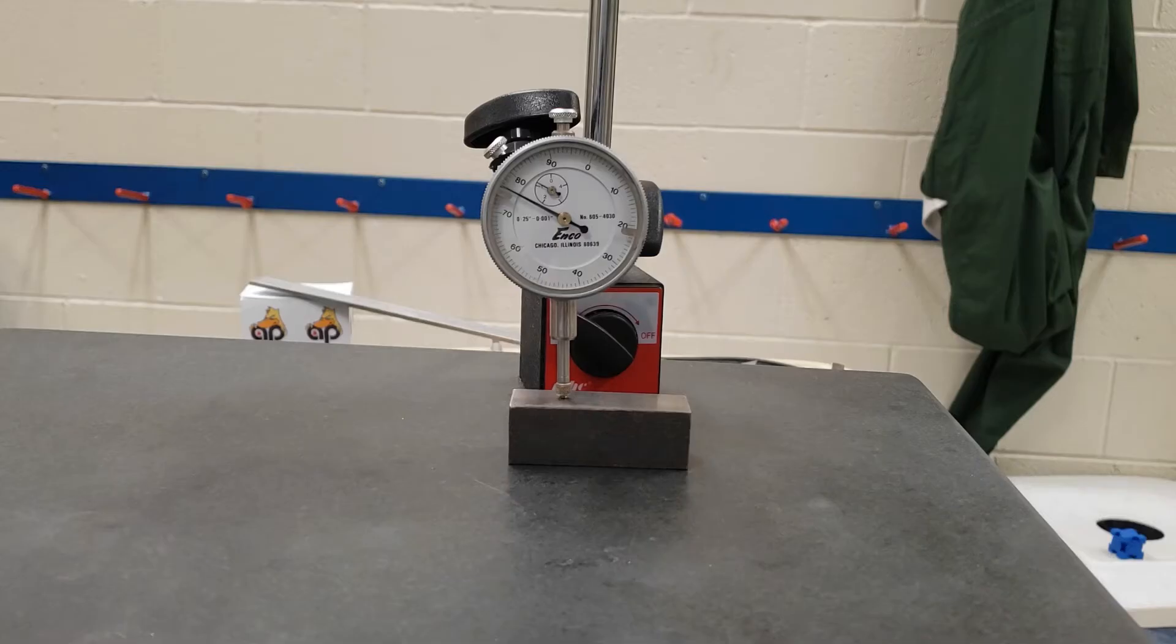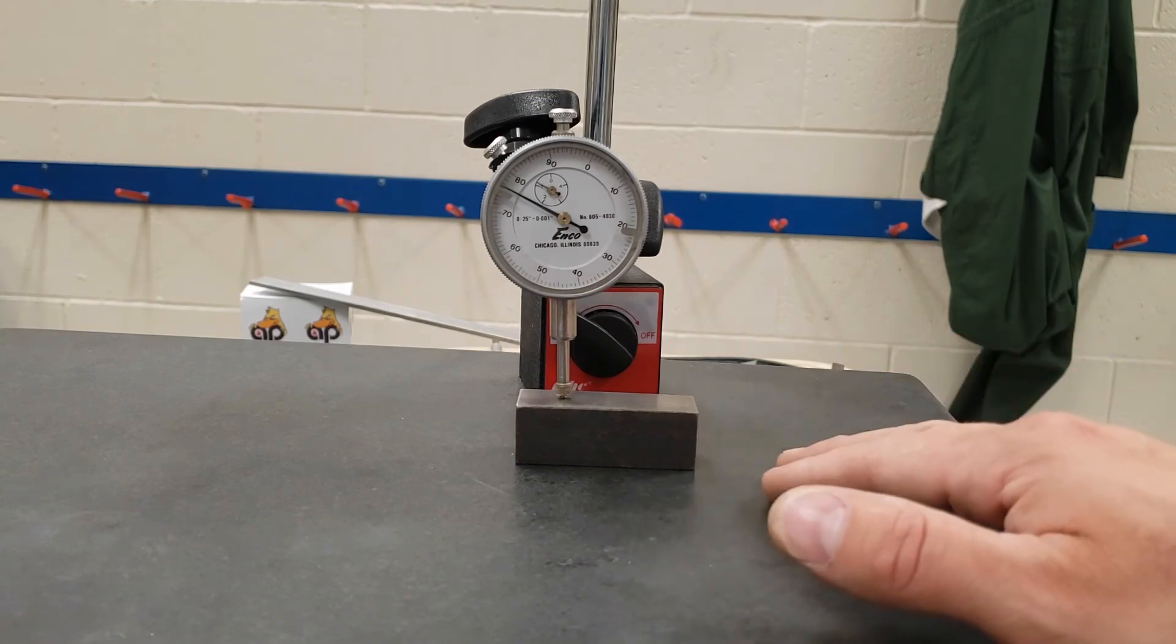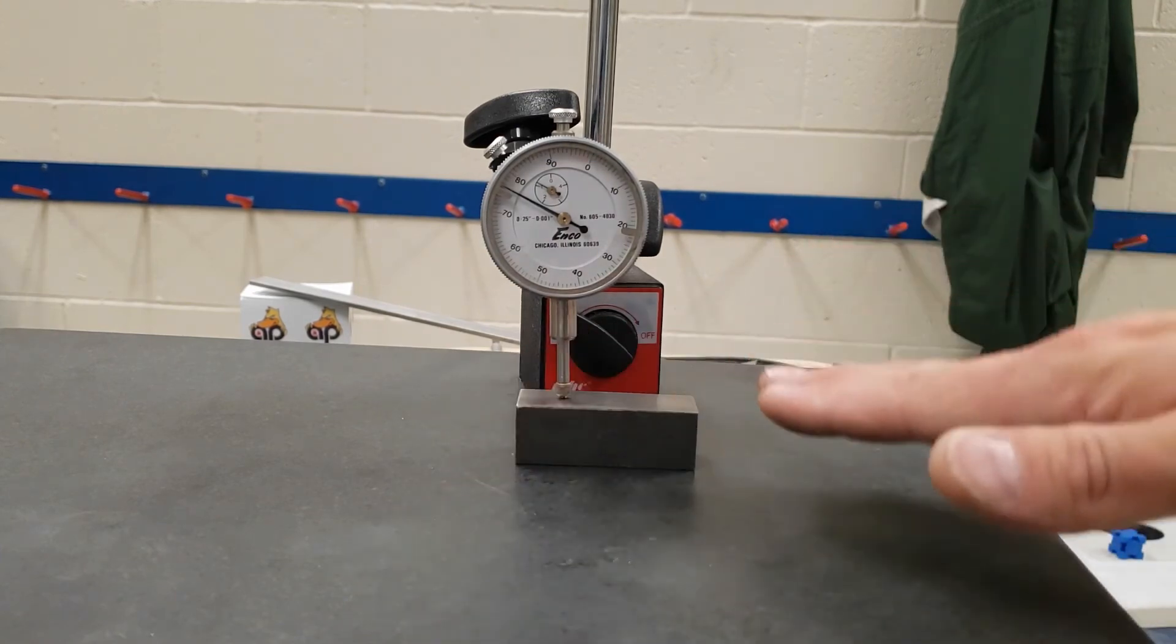You will be using a dial indicator to determine how far off of parallel this piece of steel is. It has been ground on both sides fairly accurately, but with a bit of a taper.